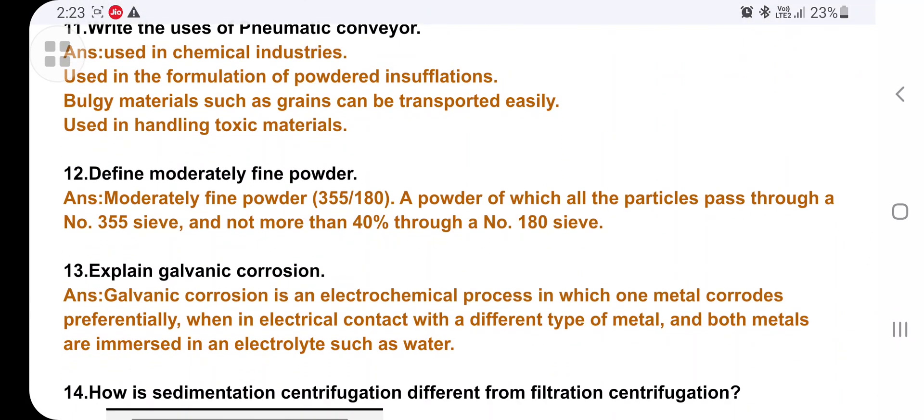Define moderately fine powder. It is a powder of which all the particles pass through sieve number 355 and not more than 40 percent through sieve number 180. Less than 40 percent of the particles are passed through sieve number 355. If greater than 40 percent, it won't pass. Remember this one.